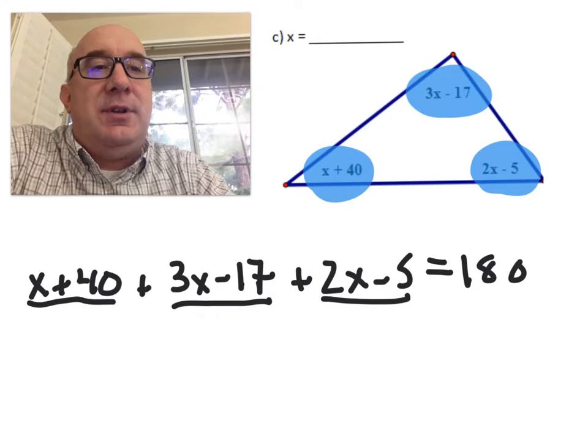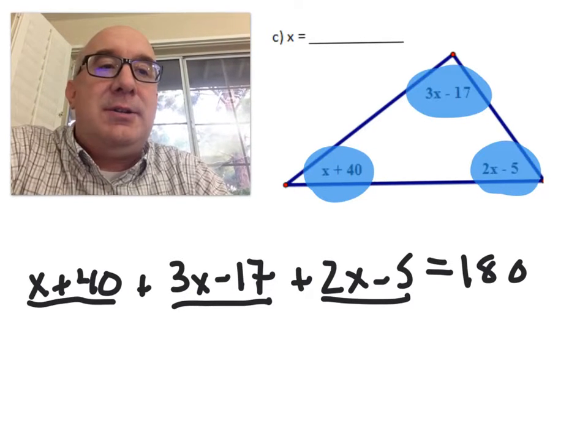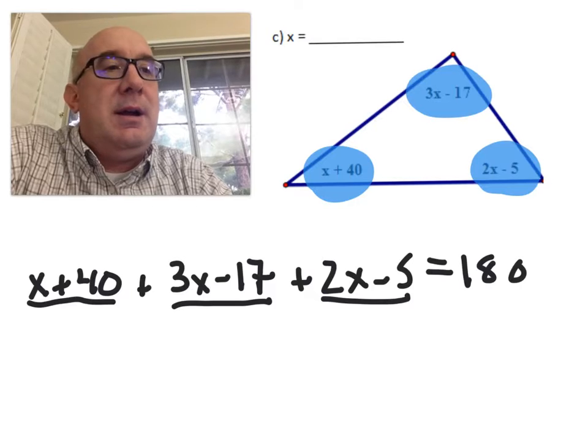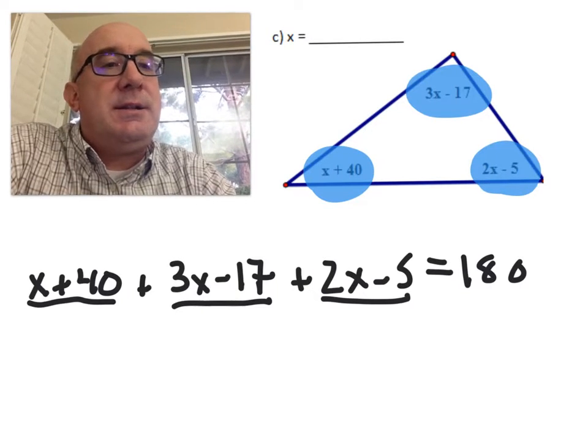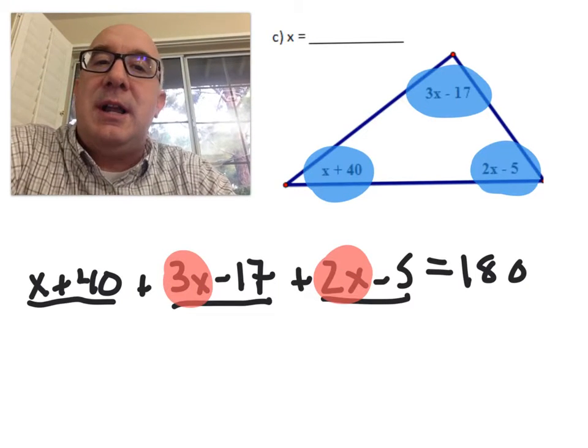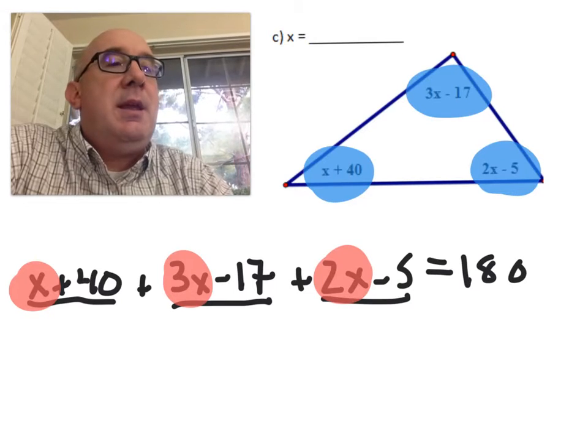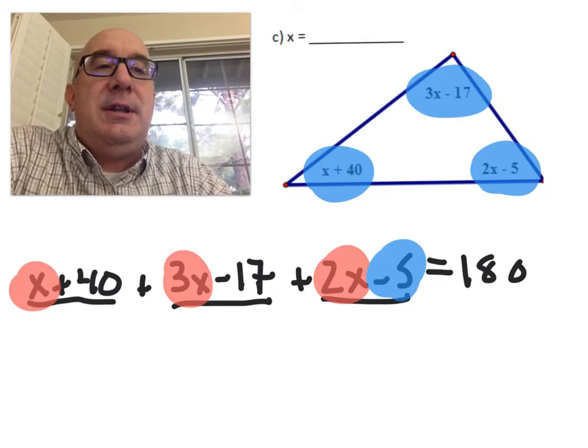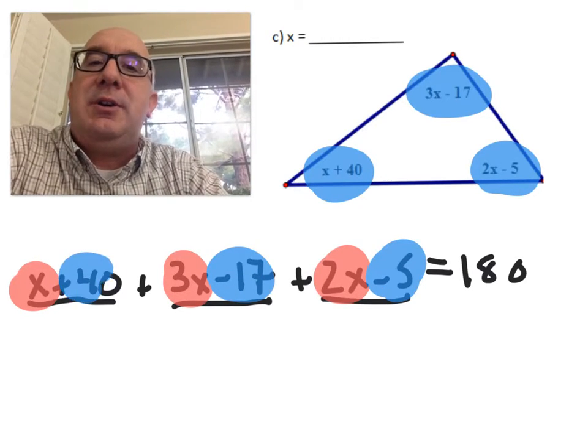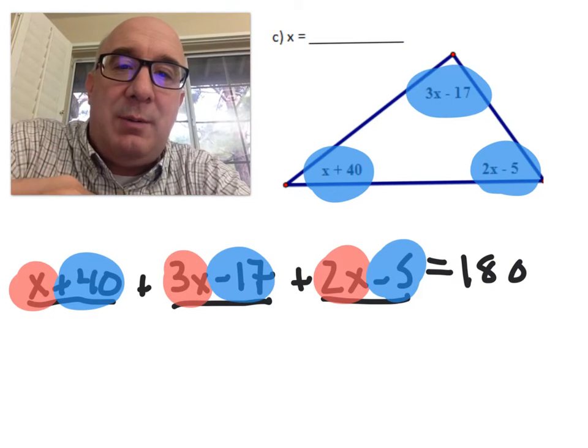So then all you have to do is gather your like terms here. This like term, this like term, and this like term, and then you would gather the constants as well and put those together and then solve the problem.